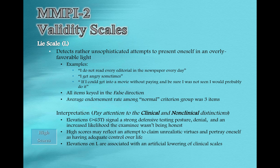In our class, we are emphasizing the L, F, and K scales — the three big validity scales. The L scale detects rather unsophisticated attempts to present oneself in an overly favorable light. The individual isn't very good at covering their tracks. Here are a few examples: 'I do not read every editorial in the newspaper every day.' 'I get angry sometimes.' Like most of us get angry sometimes, right? 'If I could get into a movie without paying and be sure I was not seen, I would probably do it.' These items help us understand how a person may be presenting in an unsophisticated way.